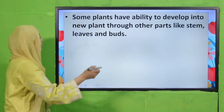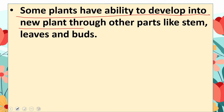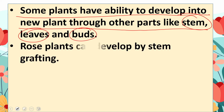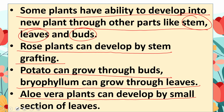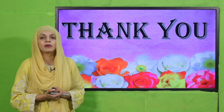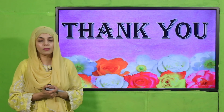I hope you have enjoyed today's lecture. In today's lecture we have learned that some plants have the ability to develop into new plants through other parts like stem, leaves, and buds. Rose plants can develop by stem grafting; potatoes can grow through buds; Bryophyllum can grow through leaves; and aloe vera plants can develop by small sections of the leaves. Now you know a lot about plants, their seeds, their different parts, and how they reproduce. Keep everybody around you safe, have a good day, thank you so much, and Allah Hafiz.